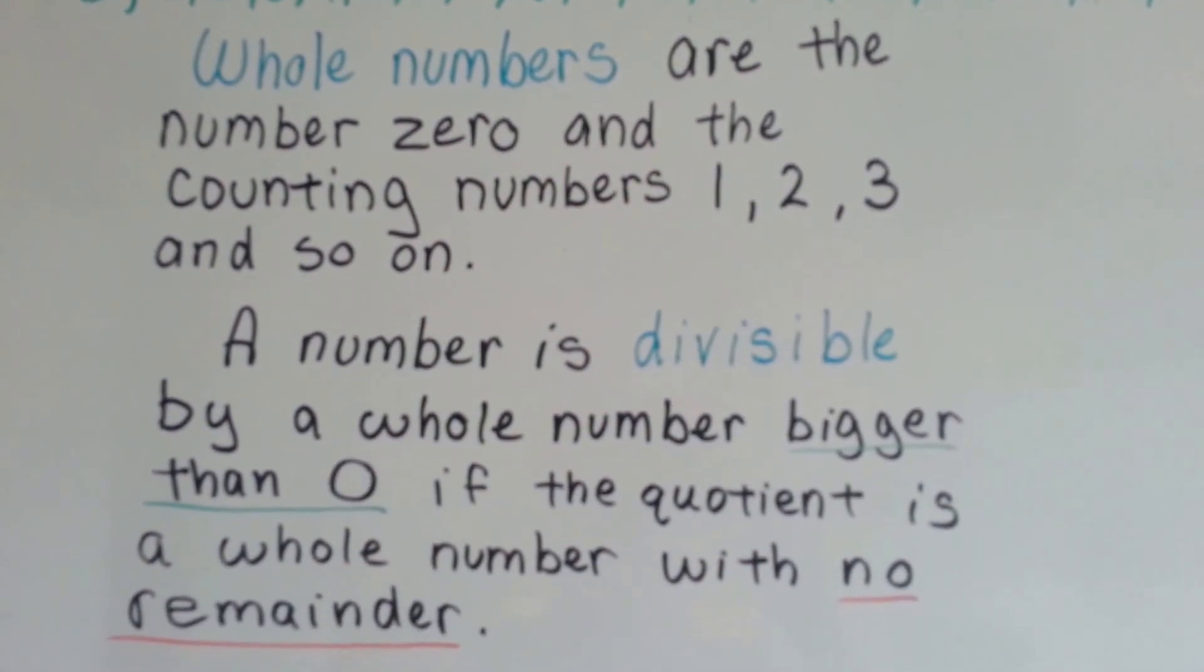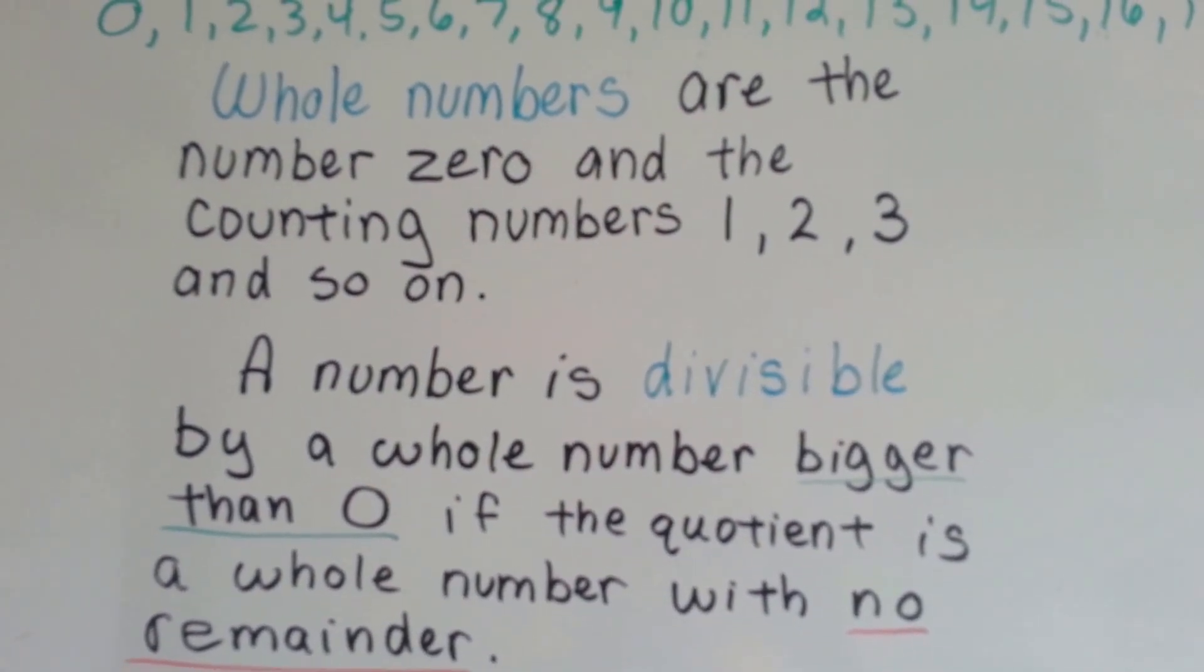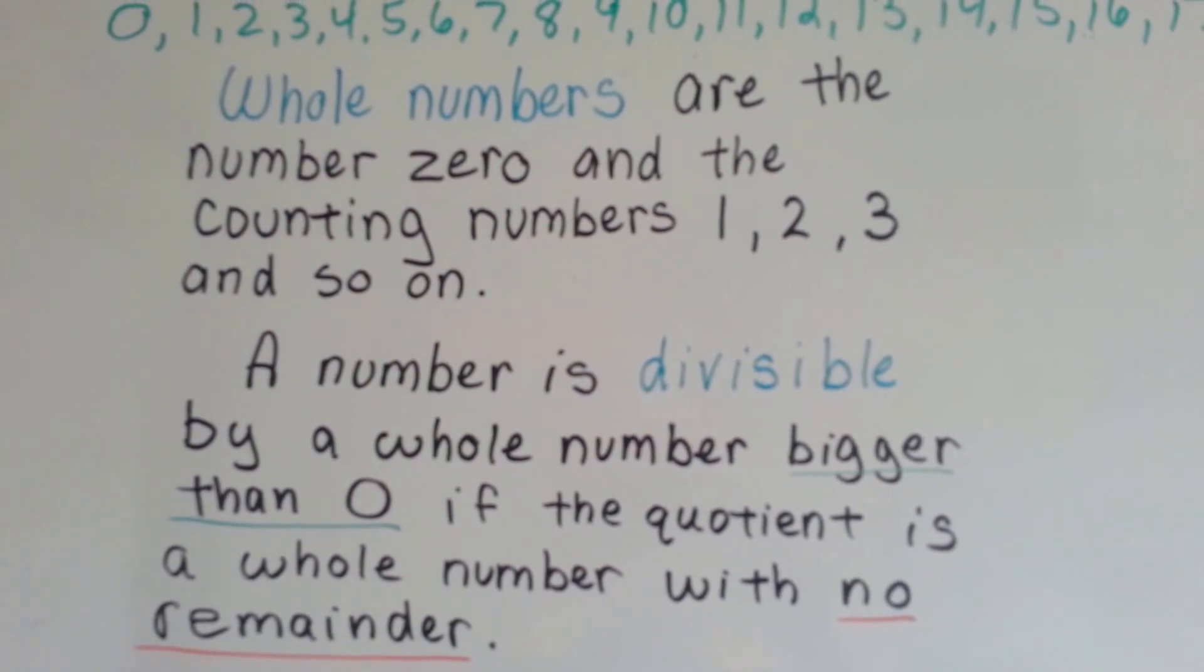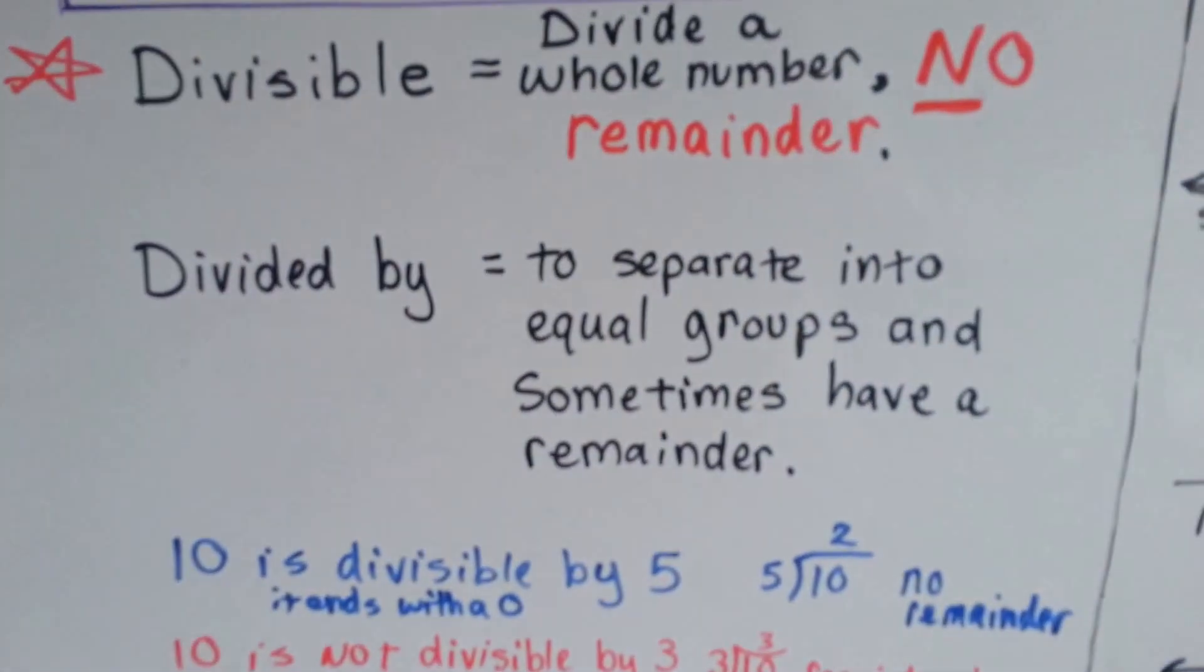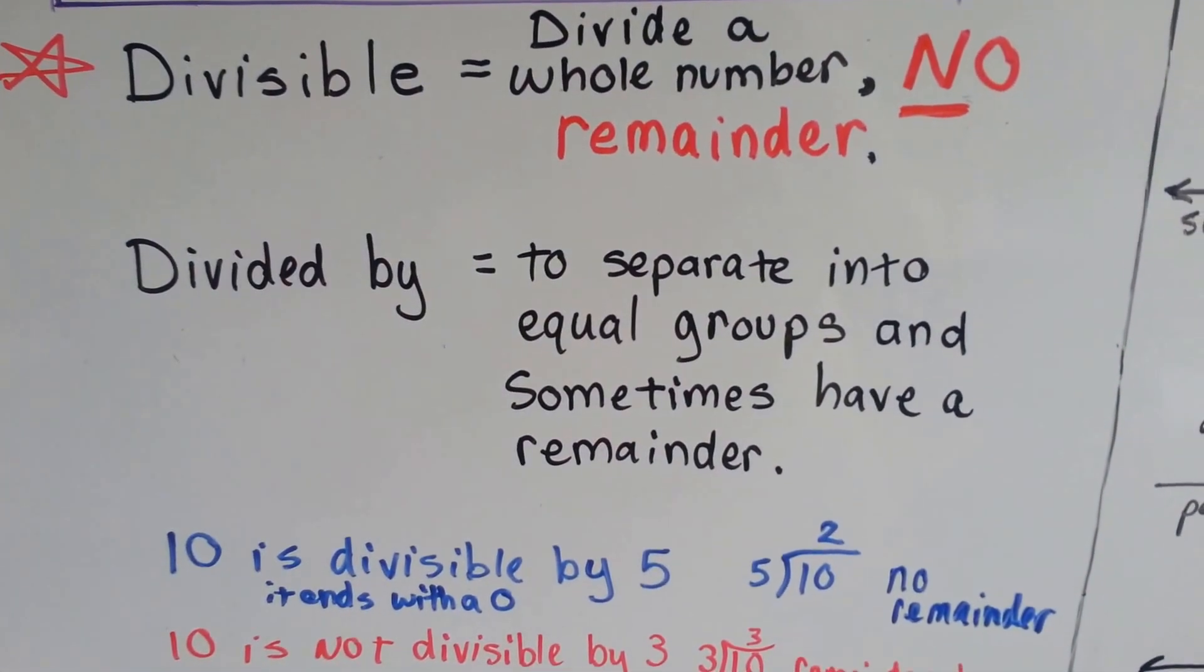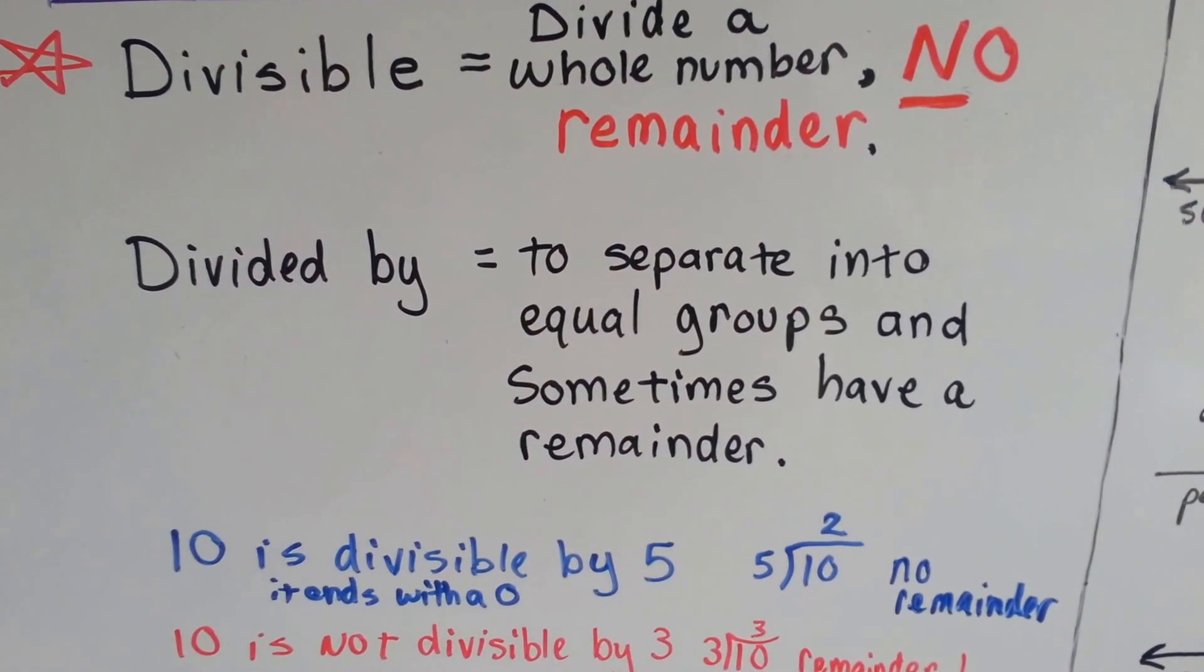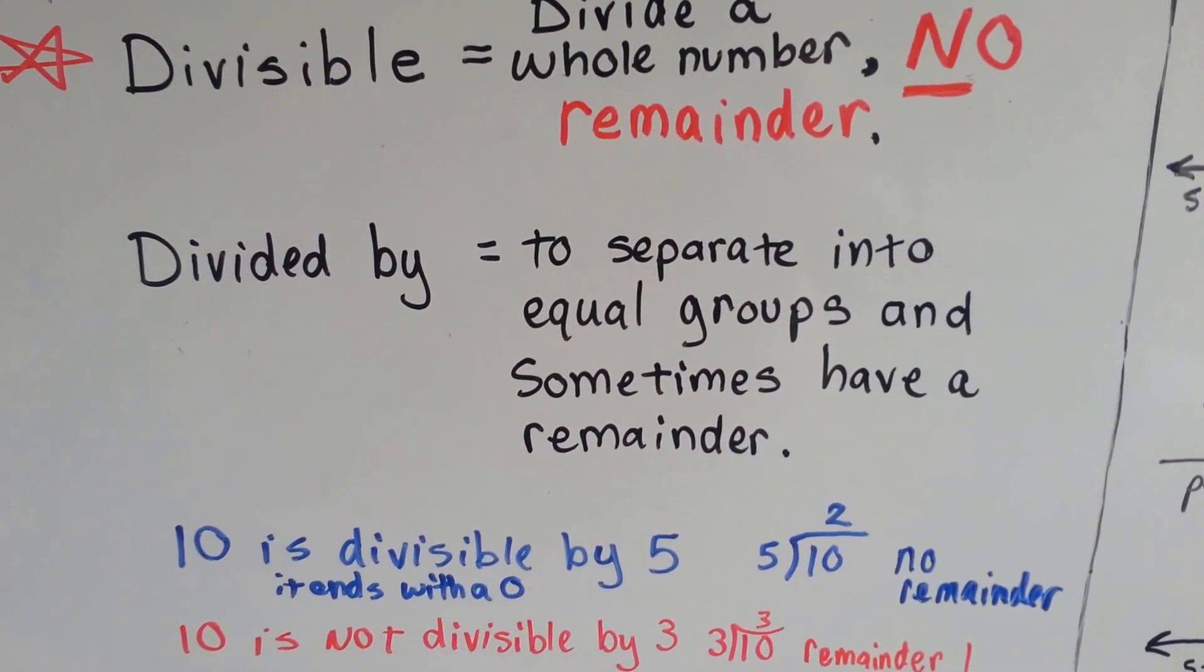A number is divisible by a whole number bigger than 0 if the quotient is a whole number with no remainder. What does that mean? It means a number is divisible if you can divide the whole number and there's no remainder, then it's divisible by that number.